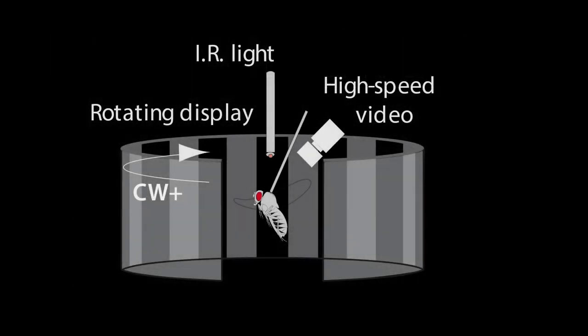Understanding what controls head movements in flies may reveal basic principles about active vision across many species in the animal kingdom. To study the control of head movements and head saccades in flies, we placed flies in a virtual reality flight simulator where we could precisely control their visual experience.